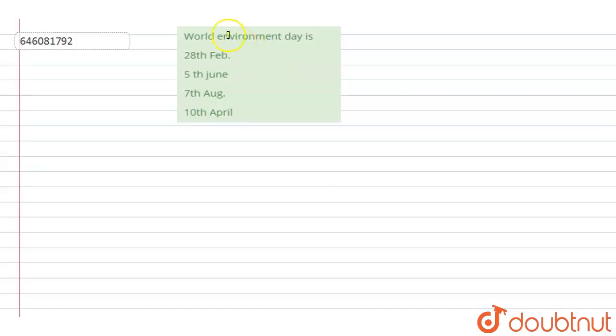Question is: World Environment Day is? Options are: 28th February, 5th June, 7th August, 10th April.